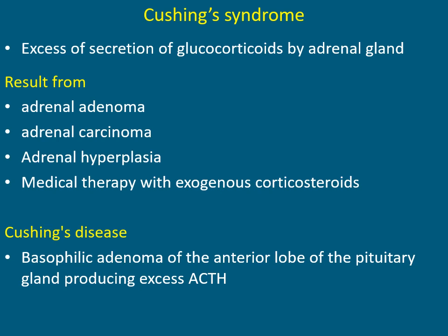Cushing's syndrome is the excess secretion of glucocorticoids by the adrenal gland. Hormone levels are increased in Cushing's syndrome, resulting from adrenal adenoma, adrenal carcinoma, adrenal hyperplasia, or medical therapy with exogenous corticosteroids. Cushing's syndrome involves a basophilic adenoma of the anterior lobe of the pituitary gland producing excess adrenocorticotrophic hormone (ACTH).